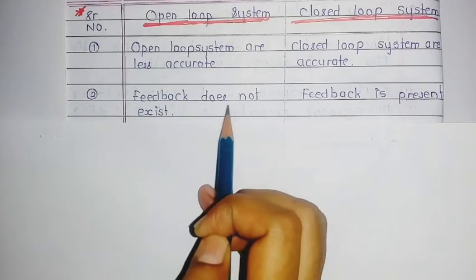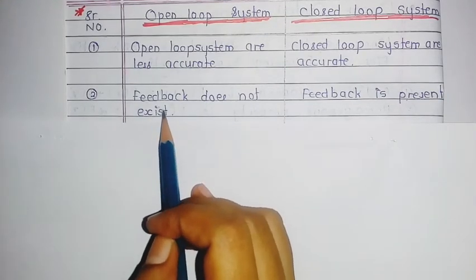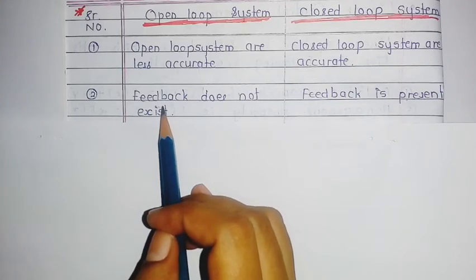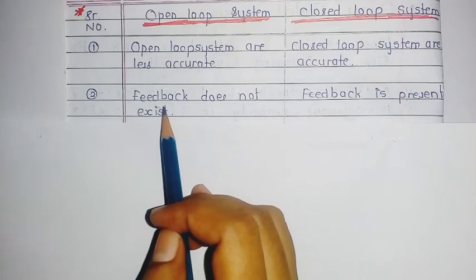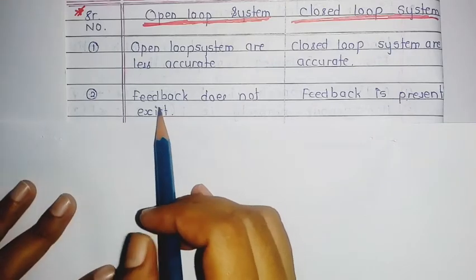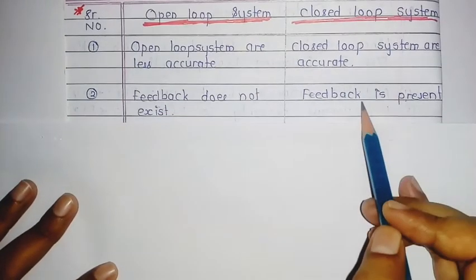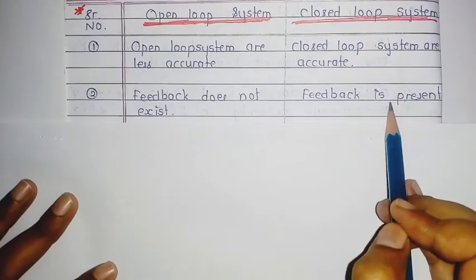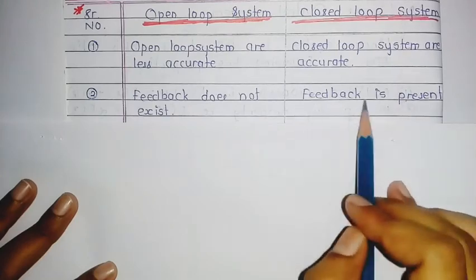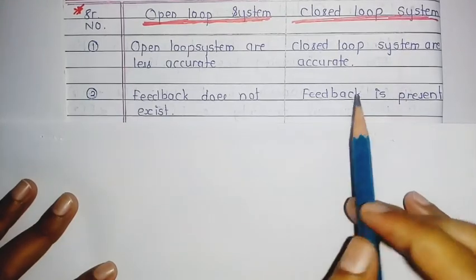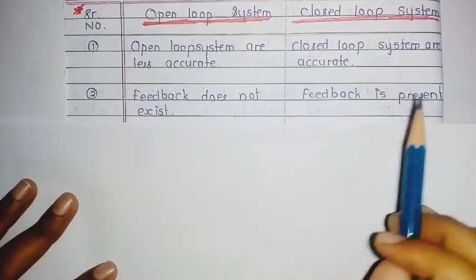The second point is feedback. Feedback does not exist in the open loop system — there are no sensors like temperature sensors, water sensors, or heater sensors. In the closed loop system, feedback is present.